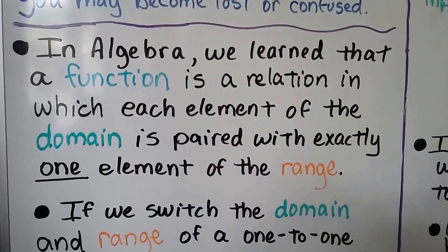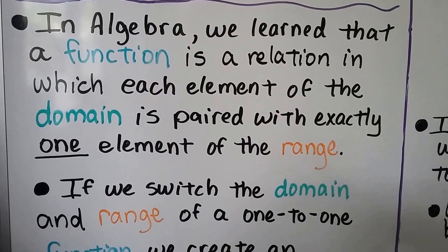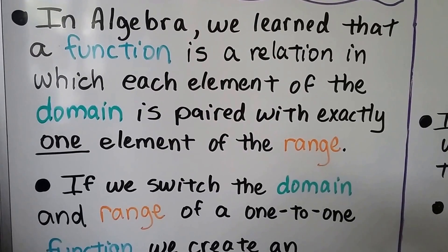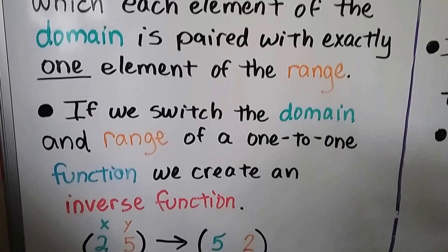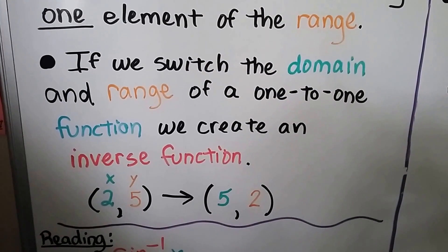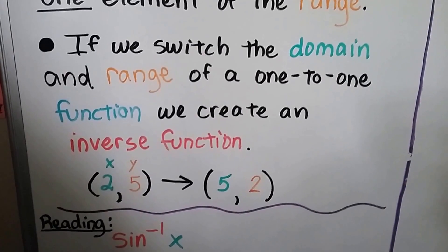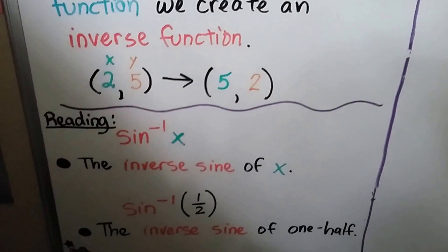In algebra, we learned that a function is a relation in which each element of the domain is paired with exactly one element of the range. If we switch the domain and range of a one-to-one function, we create an inverse function. So now the x is a 5 and the y is a 2.